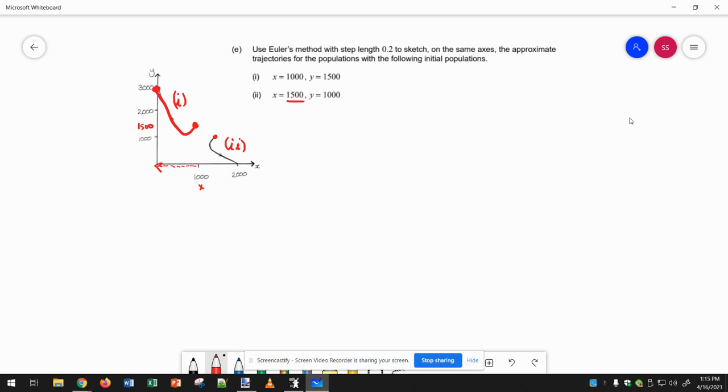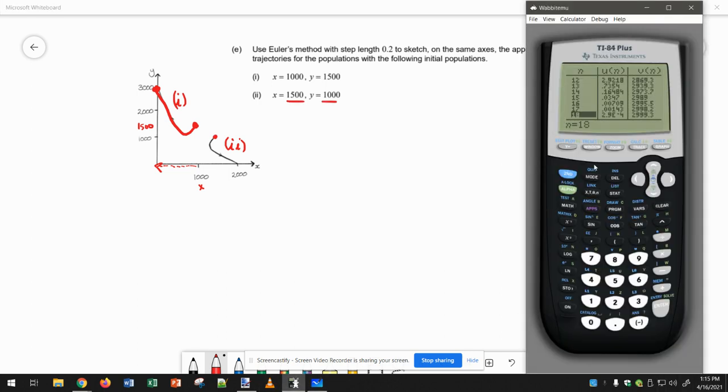So this time we're just starting at a different point, and you can change that now. Go back to the y equals and change this one to be 1500, because x, now we're starting x is 1500 and y is 1000.